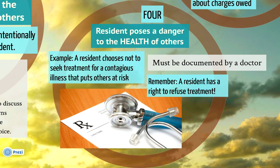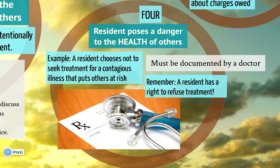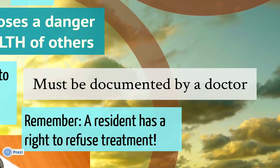The fourth situation where discharge is appropriate is when a resident poses a danger to the health of others in the facility. An example would be where a resident chooses not to seek treatment for a contagious illness that puts others at risk. We have to remember that the resident has the right to refuse treatment, but exercise of that right has consequences sometimes, and those consequences may include discharge. A doctor must also document the risk.